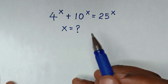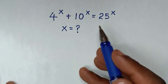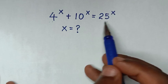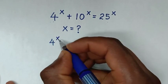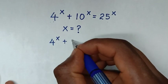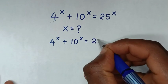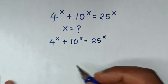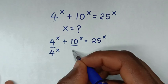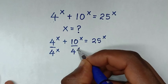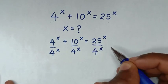In the first step, we'll divide by 4 power of x on both sides. So from this equation — 4^x + 10^x = 25^x — we divide each term by 4^x.